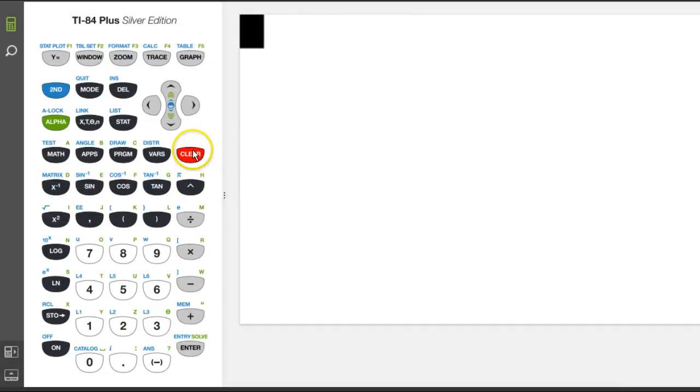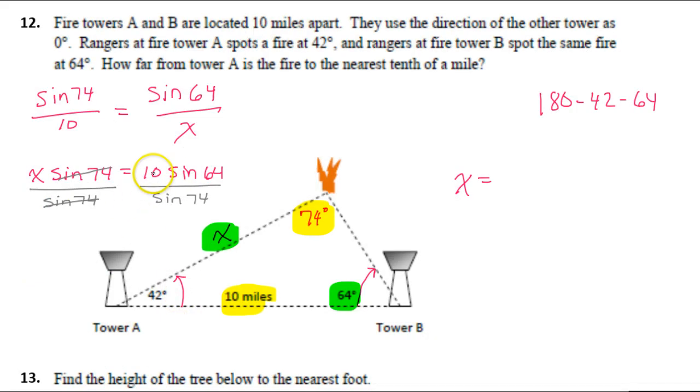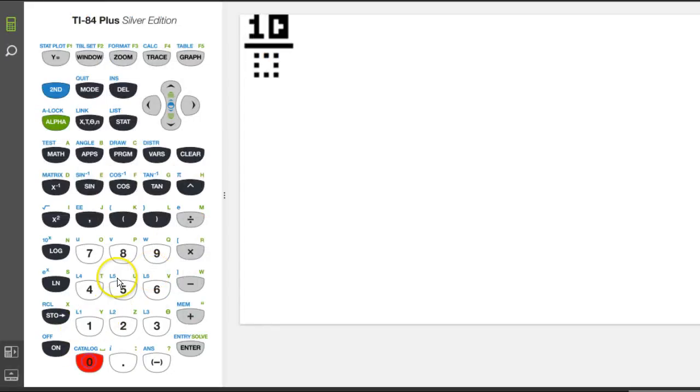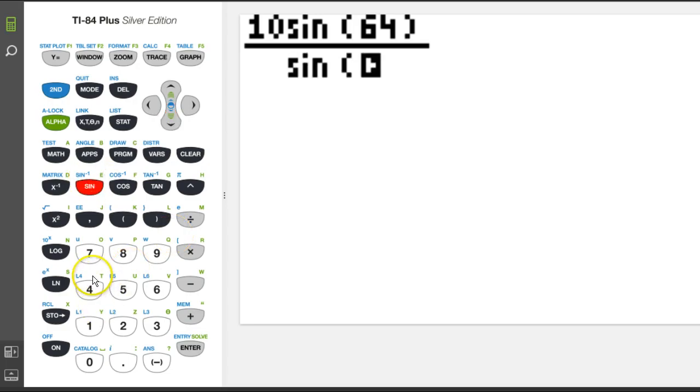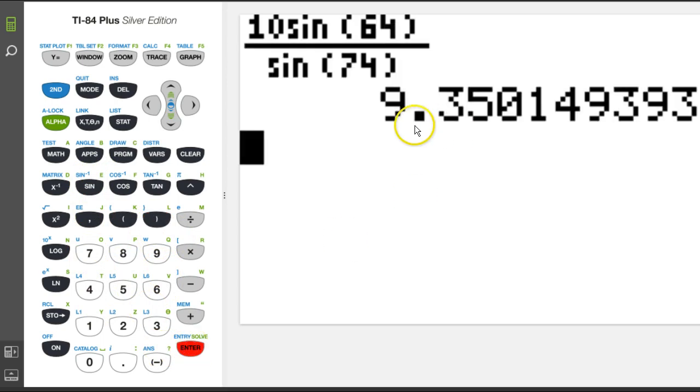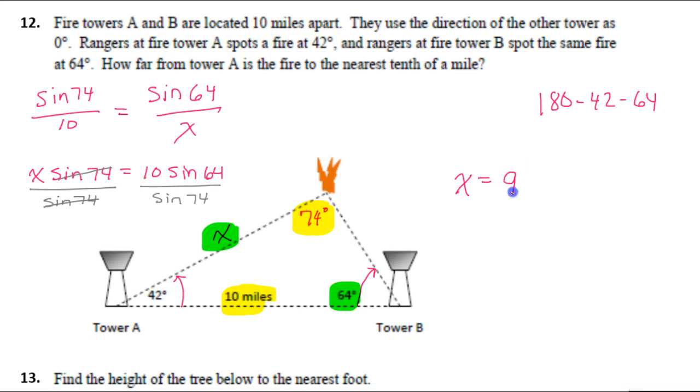Let's just type all that into our calculator. Remember, you can set a fraction by hitting alpha Y equals, enter. So now in my numerator I need 10 sine 64. So 10 sine 64 over sine 74. That is 9.350. They said the nearest tenth of a mile, so that's 9.4 miles if I round to the nearest tenth.